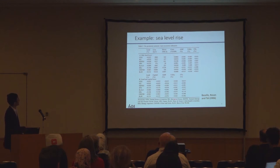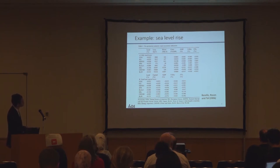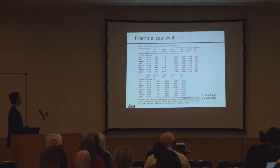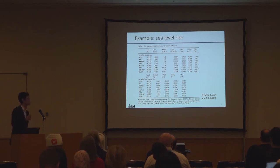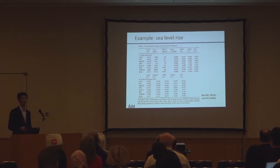This is one example which I took from a Bosello study. There is various information in this table, but let us focus on the GDP change associated with sea level rise by regions. It shows 0.07 percent, which is again a very small number. But it is only a sea level rise effect, and we can imagine that we have multiple sectors in fact, which could be much higher than this one.